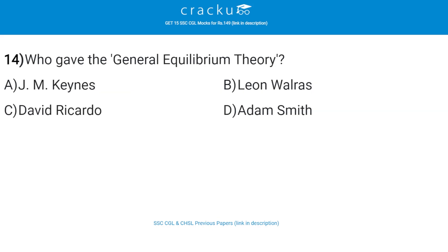Who gave the General Equilibrium Theory? The correct answer is B, Leon Walras. The General Equilibrium Theory attempts to explain the functioning of the macroeconomy as a whole, rather than as a collection of individual market phenomena. The theory was first developed by the French economist Leon Walras in the late 19th century.